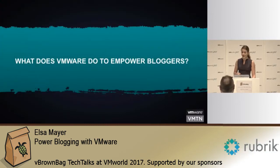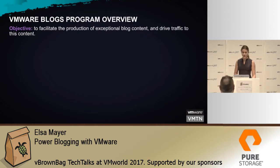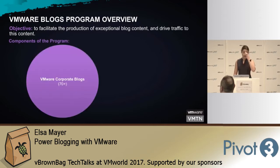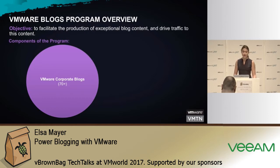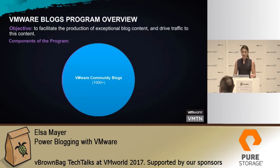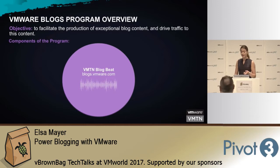What are we doing to empower you? Let's talk about the blog program as it stands. The objective is to facilitate the production of exceptional blog content and drive traffic to it. This is through the VMware corporate blogs — 70-plus internal blogs covering products, business units, and different geolocations — and then the thousand-plus community blogs managed by all of you, aggregated into a single RSS feed.